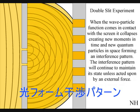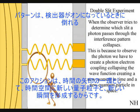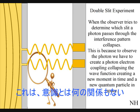When the observer turns on a detector to determine which slit a photon passes through, the interference pattern collapses. At that moment in time, the interference pattern disappears. Because to observe the photon, we have to physically create a photon-electron coupling, collapsing each wave-front into a new quantum particle that will have its own position in space and time, that the wave-front never had before the collapse.